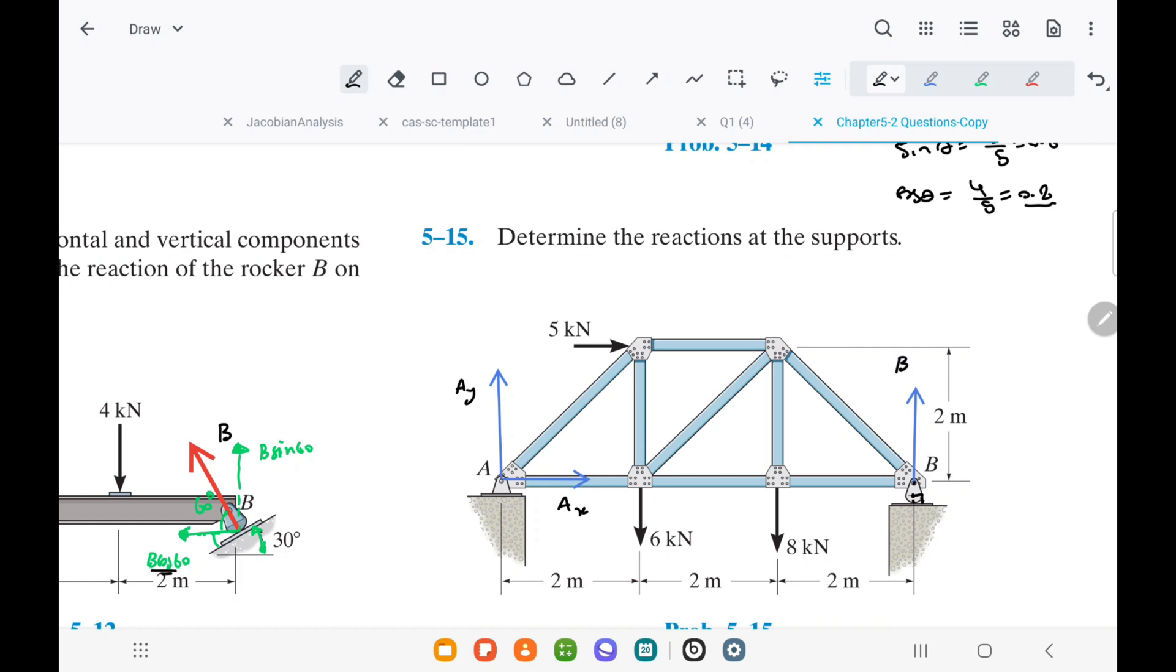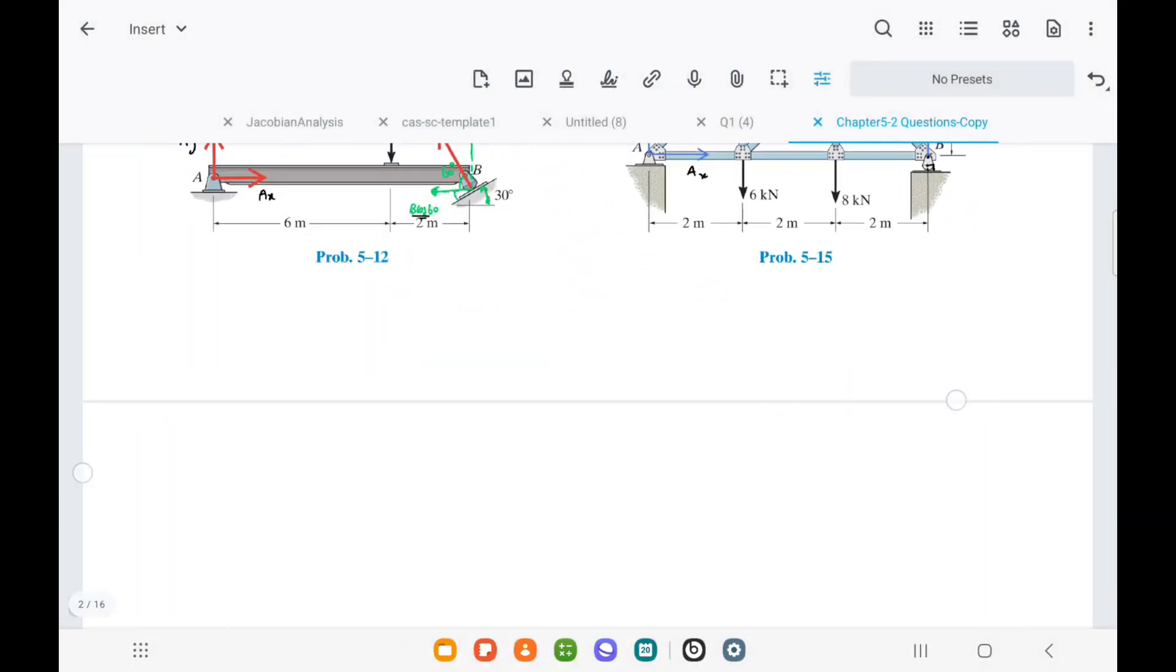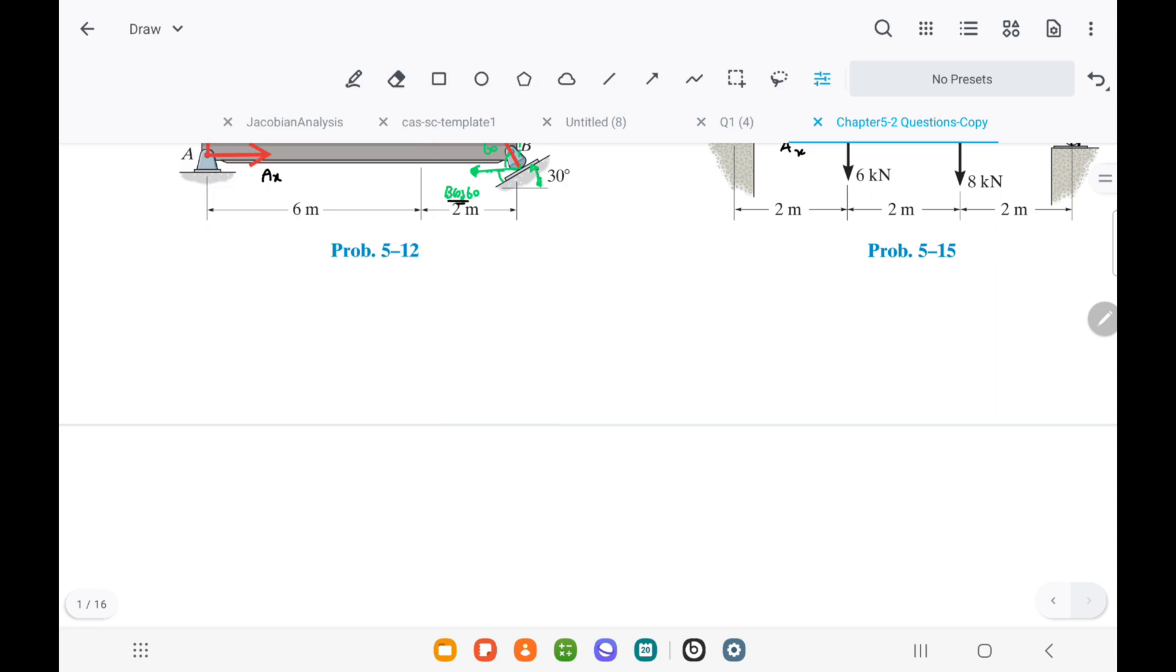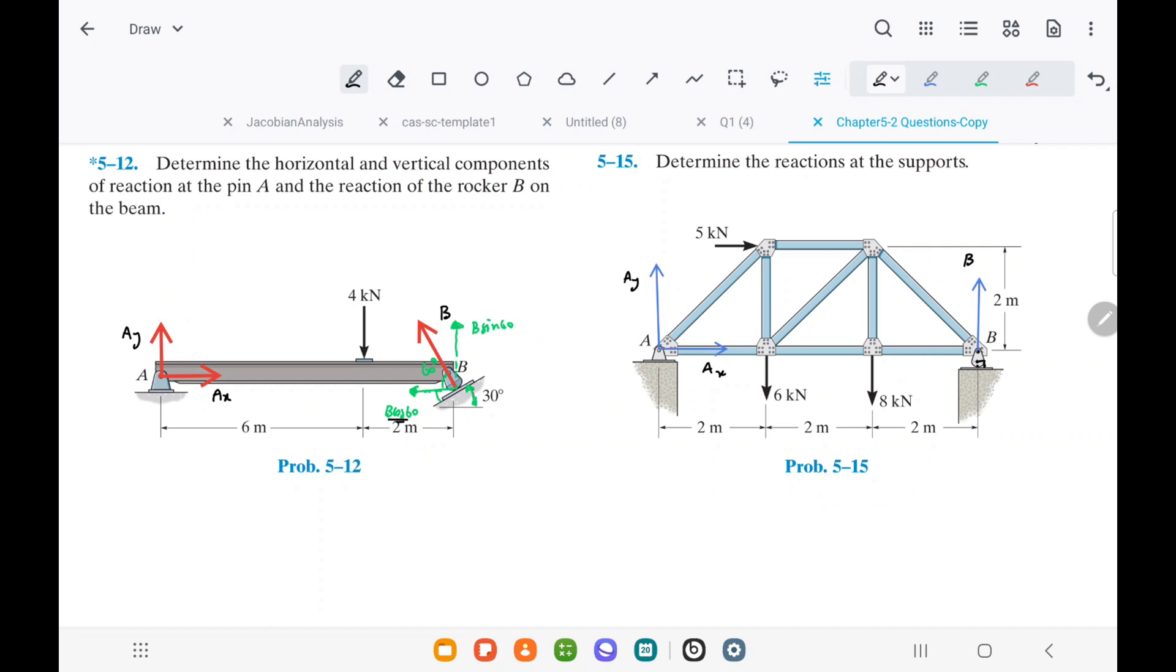To find the forces, we can take the moment at point A. This approach eliminates the unknown forces Ax and Ay and simplifies the equation to only one unknown force, B.